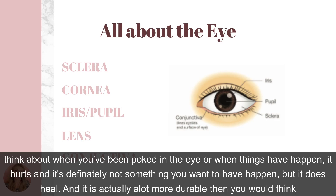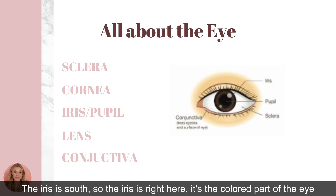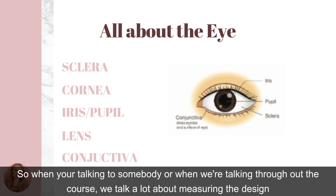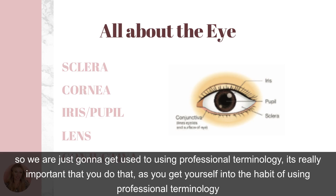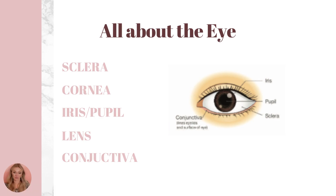The iris is the colored part of the eye — that's the part where you can tell someone has brown or blue eyes. Throughout this course we'll talk a lot about measuring the design based off of where the outside of the iris is, and we'll talk about protecting the sclera from potential damage. Getting into the habit of using professional terminology is really important — it makes you sound like a professional, adds value to your service, and builds trust and respect from your clients.